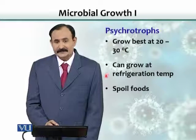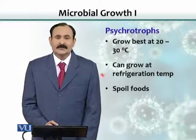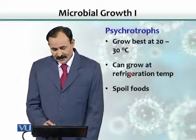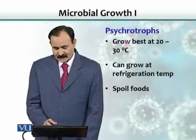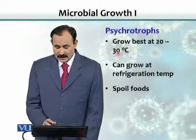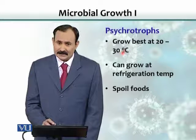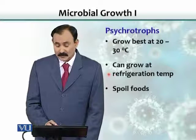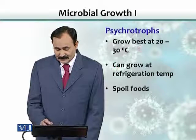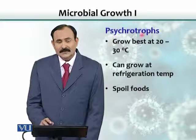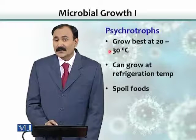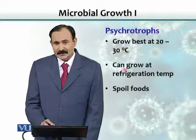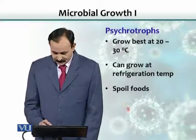In a real-life situation, when you store food in the fridge, many people think it is safe — but it is really not. Psychrotrophs can still grow there. Their best range is 20 to 30 degrees Celsius, but they can also grow at 0 degrees Celsius. Refrigeration temperature is about 4 to 8 degrees Celsius, so psychrotrophs can grow very well there and spoil food.